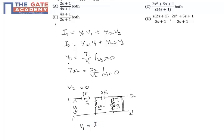So v1 equals i1 into the equivalent impedance of this whole circuit: 3s plus 1 by s into 2s plus 1. How do we get this? This is after simplification of all these resistors and capacitors impedance.